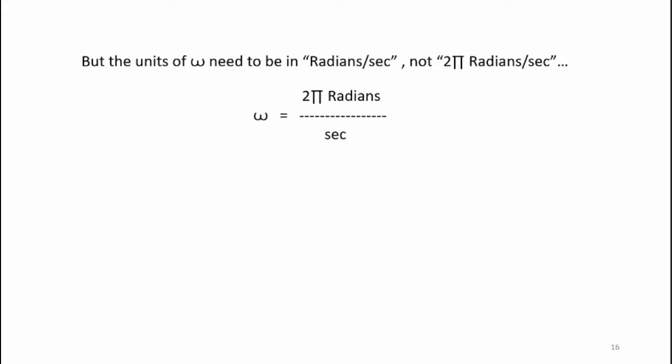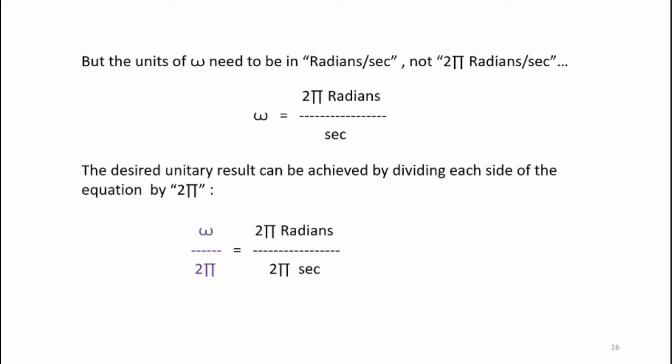But units of omega need to be in radians per second, not two pi radians per second. We need to divide the equation by two pi on each side. So we get omega over two pi equals two pi radians divided by two pi seconds. The two pi's on the right hand side cancel, and so we get the proper units of radians per second.